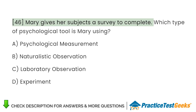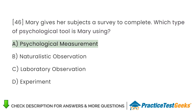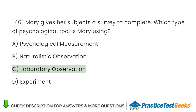Mary gives her subjects a survey to complete. Which type of psychological tool is Mary using? A. Psychological measurement B. Naturalistic observation C. Laboratory observation D. Experiment